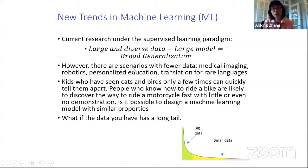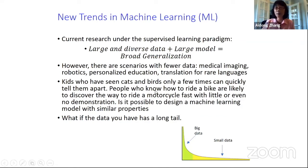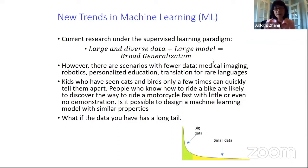The machine learning community is looking at how humans really learn. Kids who have seen cats and birds just a few times can quickly tell them apart. People can learn to ride a bike and normally can quickly learn to ride a motorcycle. That capability is not reflected in machine learning today, which requires huge amounts of data. Can we train a model with just a few data points and make better predictions?